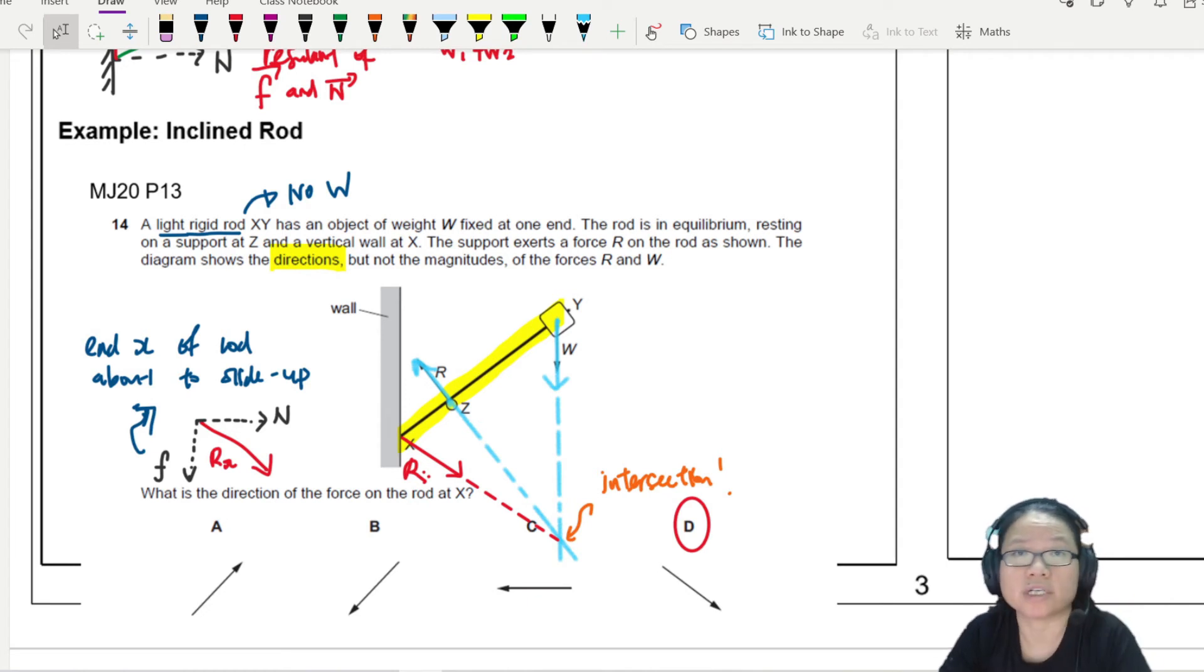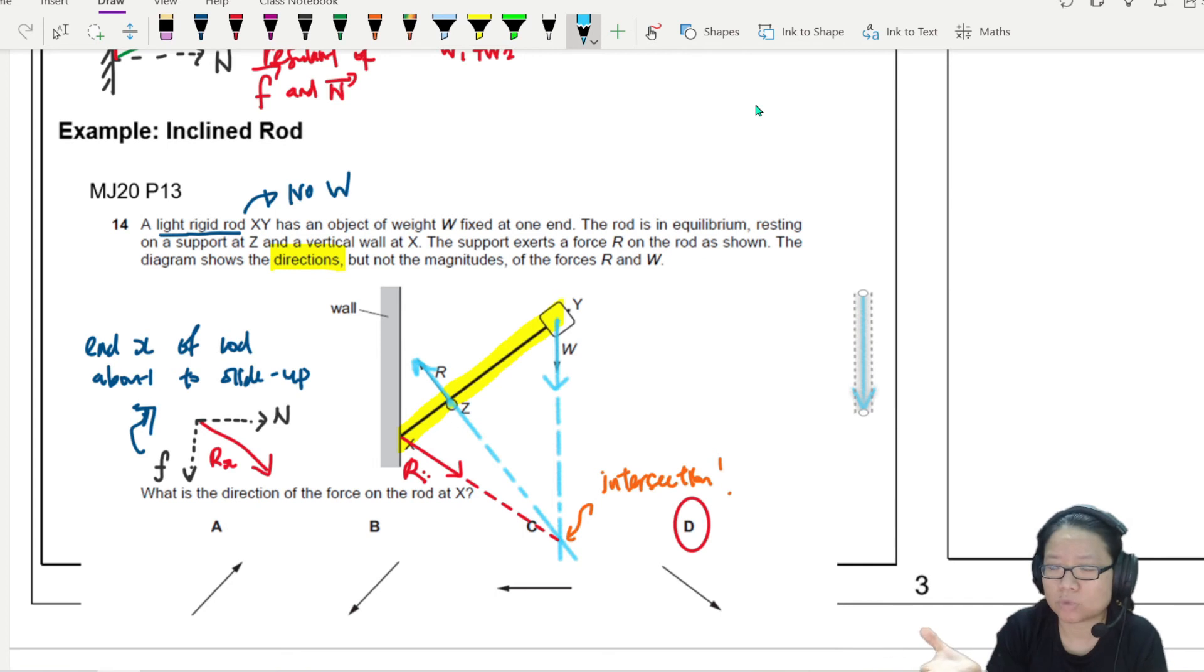But how would the diagram of forces or your vector triangle look like for this particular rod XY? Pause the video, draw first, then play again and see whether you and I draw the same drawing. I assume you already paused and drew. Let's check out your triangle versus mine. First things first, I'm going to draw W because W is the easiest - W is always downward. Maybe I draw W like that. Teacher, what length? Don't know because you don't know the magnitude, don't care, just draw it.